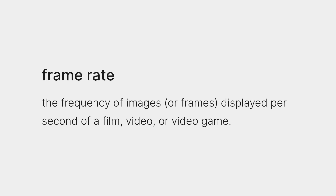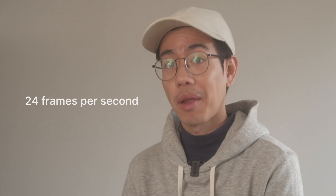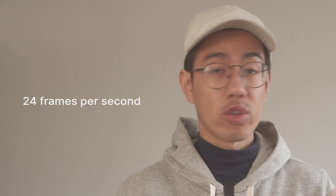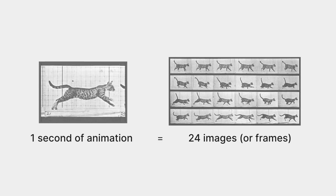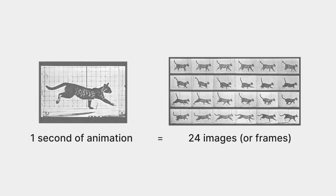Frame rate refers to the number of images shown every second. So for example, a frame rate of 24 frames per second, or 24 fps, means that every second of animation will contain 24 images, also known as frames.